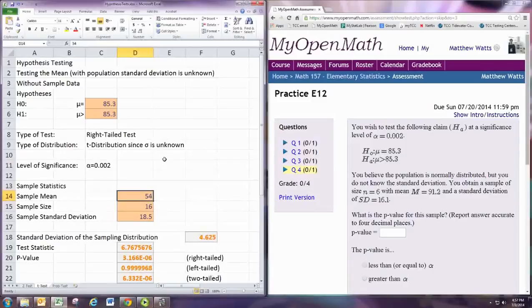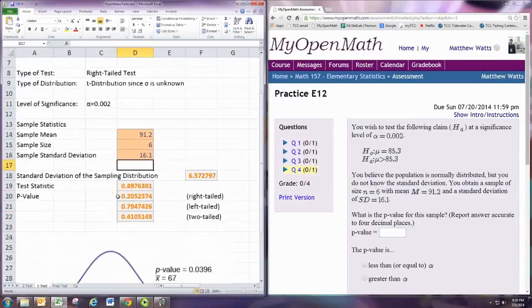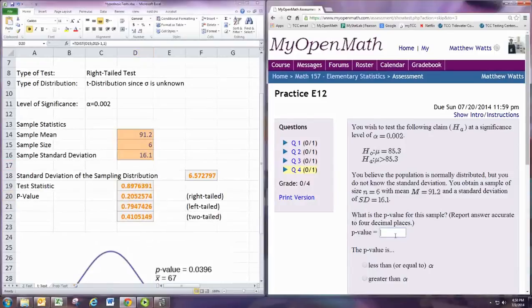Put in a sample mean. It's 91.2. Sample size is 6. Sample standard deviation is 16.1. We want the p-value that corresponds to the right-tailed value, which is 0.2053.